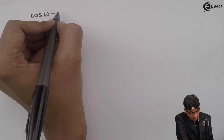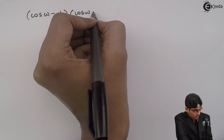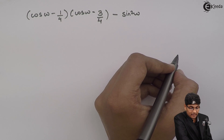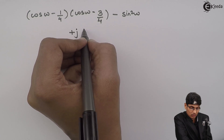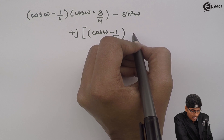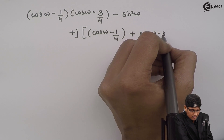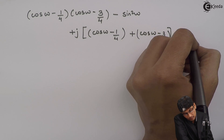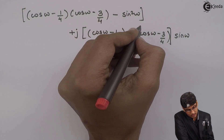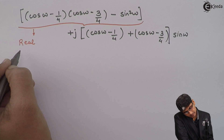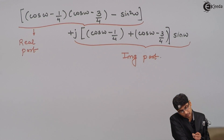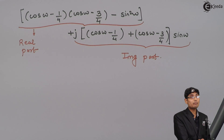Rearranging, the real part of the denominator is [(cos(ω) - 1/4)(cos(ω) - 3/4) - sin²(ω)], and the imaginary part is j·sin(ω)·[(cos(ω) - 1/4) + (cos(ω) - 3/4)]. The term without j is the real part and the term with j is the imaginary part. This completes the denominator expansion.